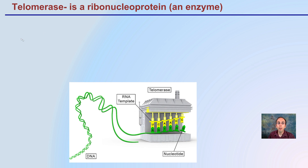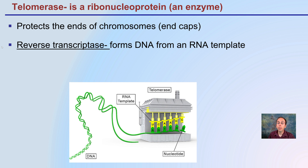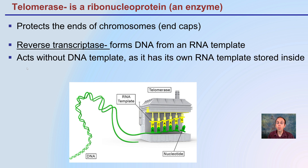Now, telomerase is a ribonuclear protein — it's an enzyme — that protects the ends of the chromosomes, or end caps. It goes through the process we call reverse transcriptase, which forms DNA from an RNA template. It acts without a DNA template; it has its own RNA template stored inside, which is then used to reverse transcribe DNA from that.